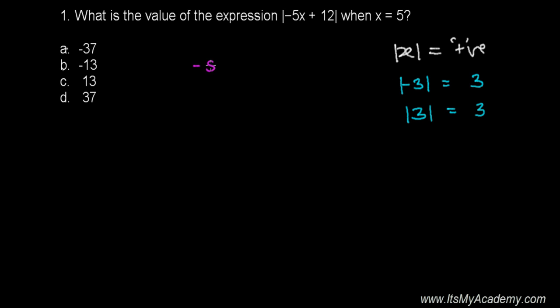We need to find this expression's absolute value when x equals to 5. So let's plug the value: -5 times 5 plus 12. And then it's going to be -5 times 5, that's going to be -25 plus 12.